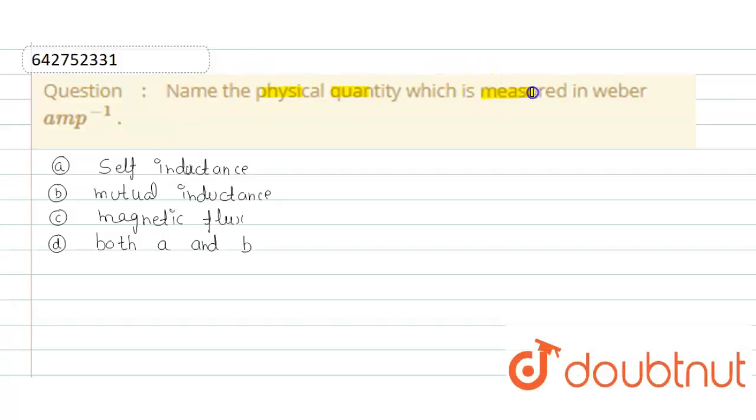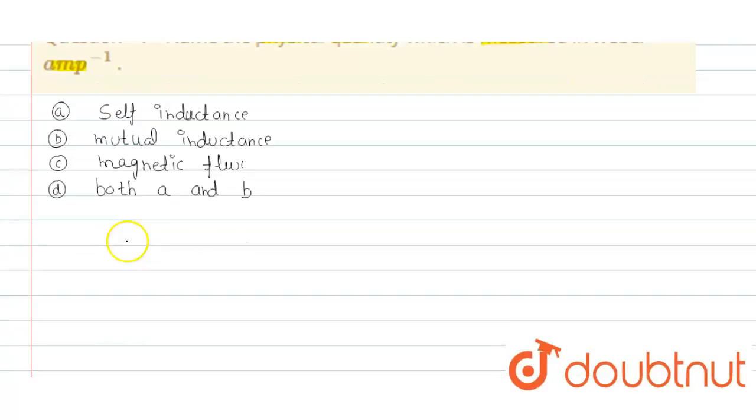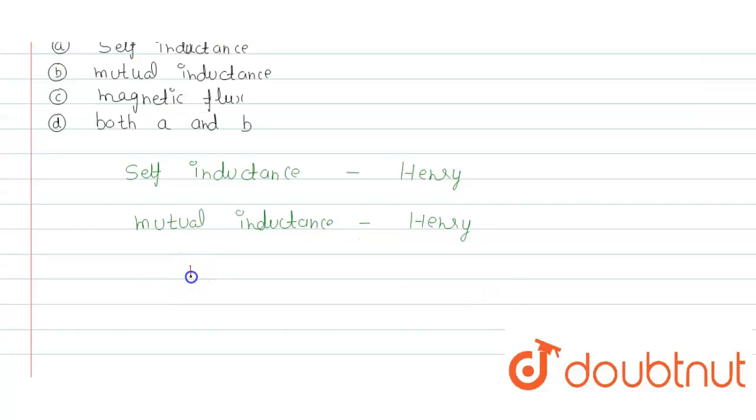So self inductance unit is henry, and for mutual inductance unit is also henry. And one henry...